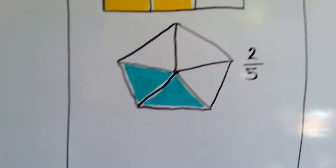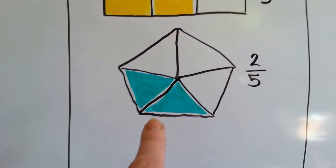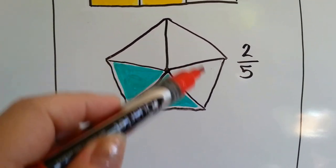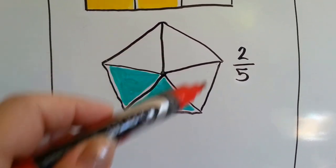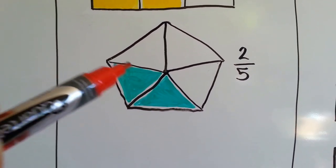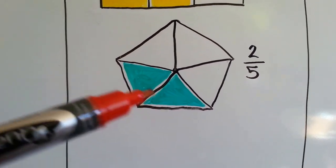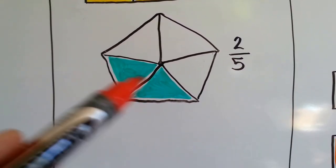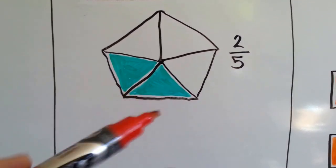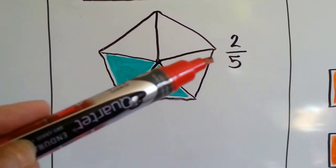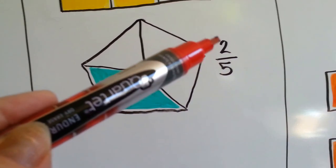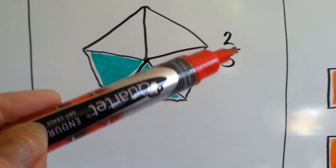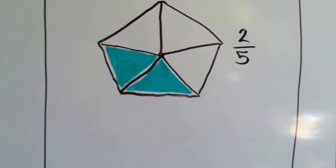Let's look at this first. We have a pentagon and it's split into five pieces — one, two, three, four, five. Two of them are green, so it's split into five pieces and two of them are green. So, two fifths are green.